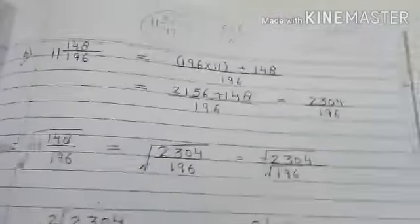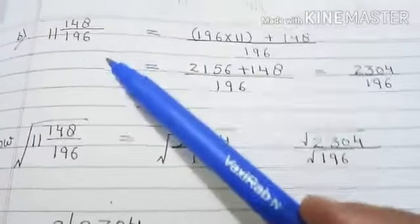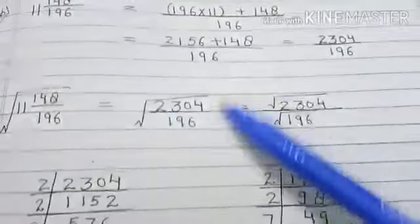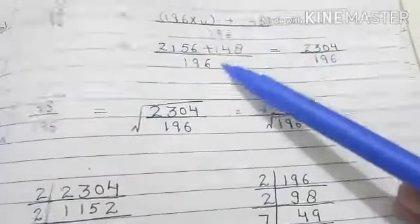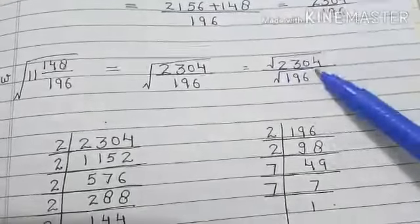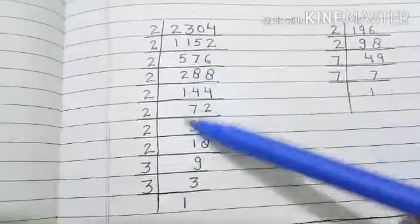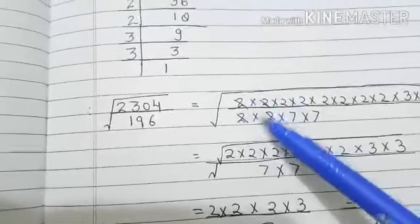Let us see one more example. This is 11 whole 148 by 196. The same method we have applied here - multiplied and then the 148 is added, we get this number. Now we have to find out the square root of this number. We will find out the separate square roots. Prime factors are these, and these are very simple prime factors you all can do. Here also you can see these can be divided.